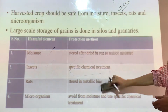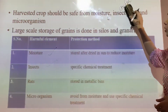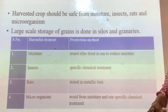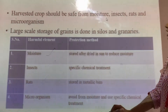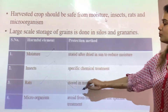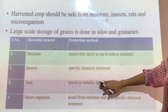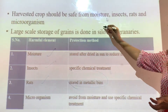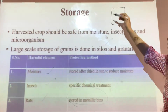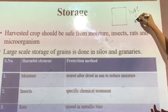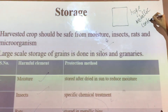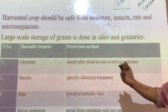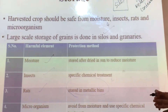Another very harmful element that badly affects crops on a large scale is rats. You must have seen rats causing a lot of mischief. These rats also affect the stored crops. In that case, we need to store the crop in metallic containers, because rats cannot harm the crop when it is kept in metallic containers. We can store crops in silos — silos are huge metallic containers in which we store our crops, and they protect the crop from rats.